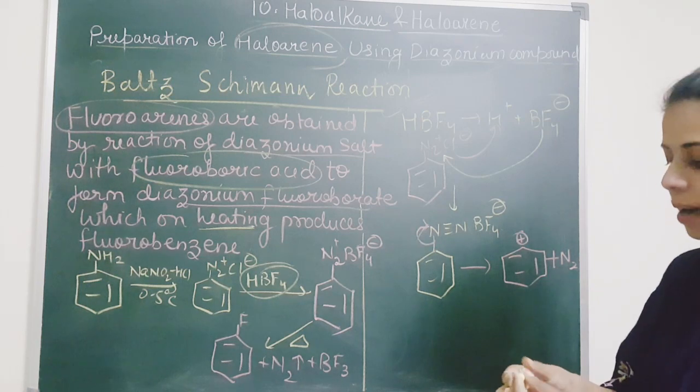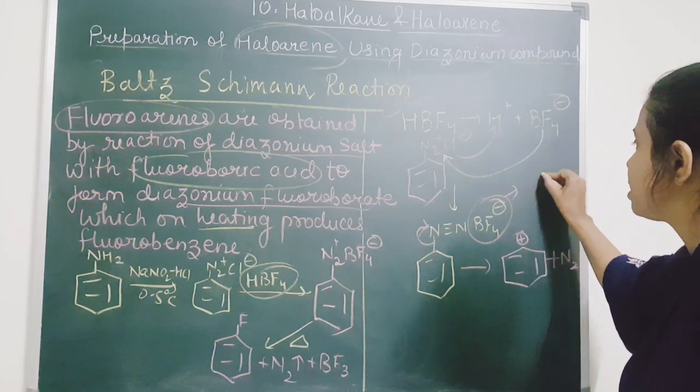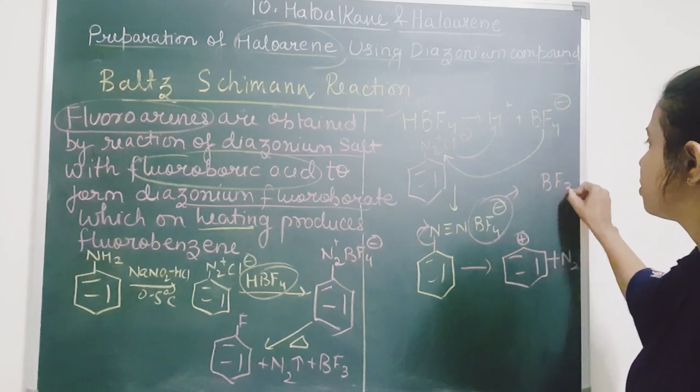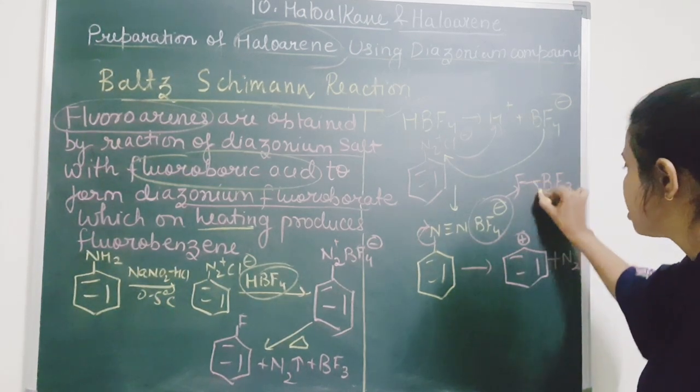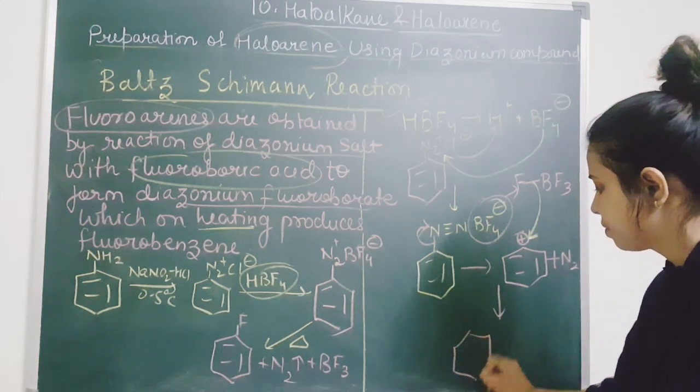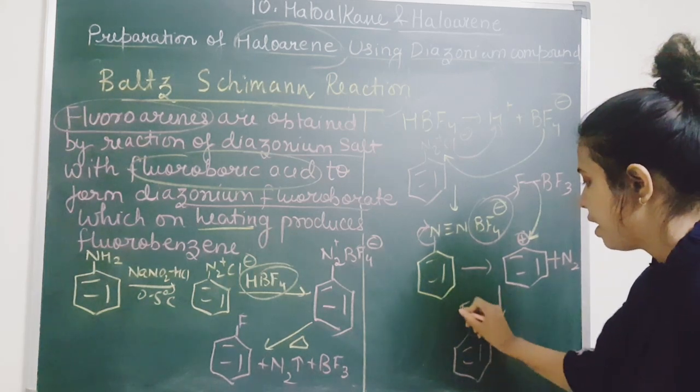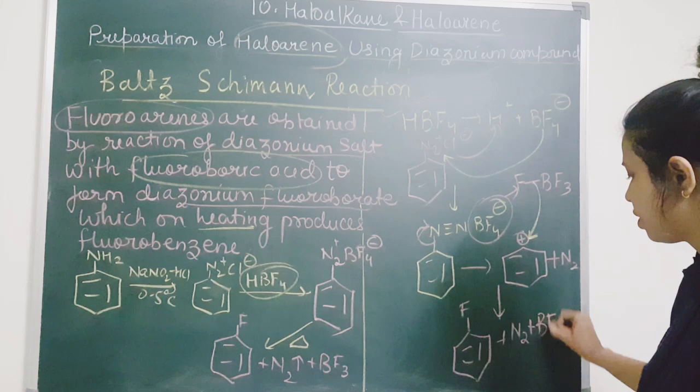Now this BF4- how it will act? See, this BF4- can be also written as BF3 and F. This bond is shifted over here and what you are getting is F plus N2 plus BF3.